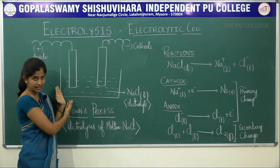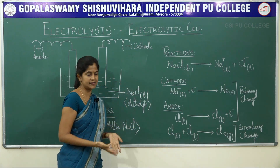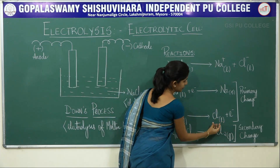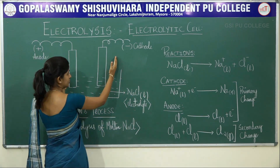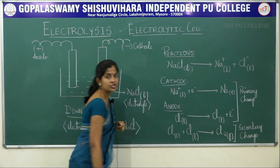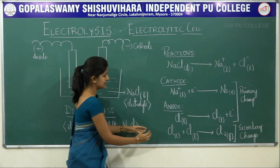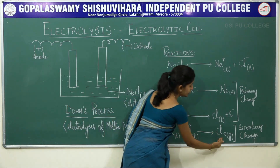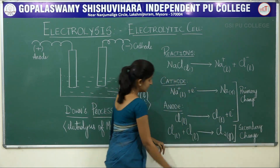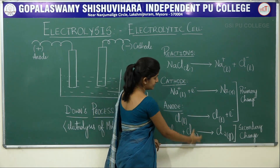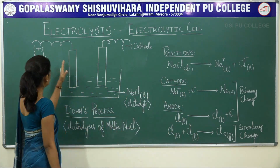At the anode, the Cl⁻ ions move towards the positively charged electrode and lose electrons — that is oxidation. As a result, Cl atoms are formed. Since Cl is unstable with an atomicity of 2, two Cl atoms combine to give a Cl₂ molecule — this is a secondary change. The Cl₂ is a gas, so it is liberated at the anode.